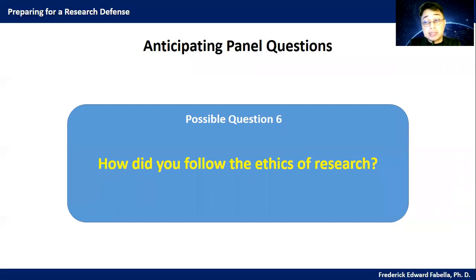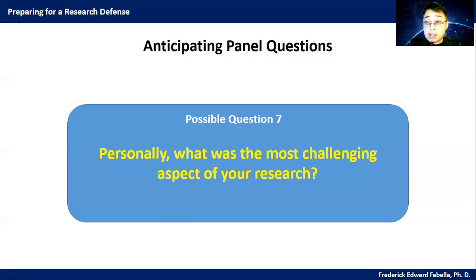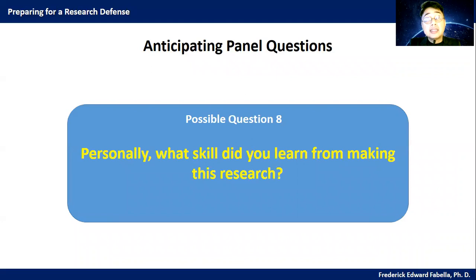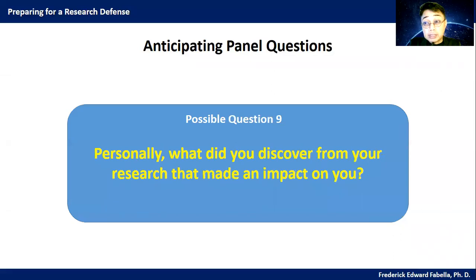Possible question six: how did you follow the ethics of research? The ethics is very important when you conduct research. Possible question seven is personal — the panelists might ask personal questions from each member, such as: what was the most challenging aspect of your research? What skill did you learn from making this research? And what did you discover from your research that made an impact on you?